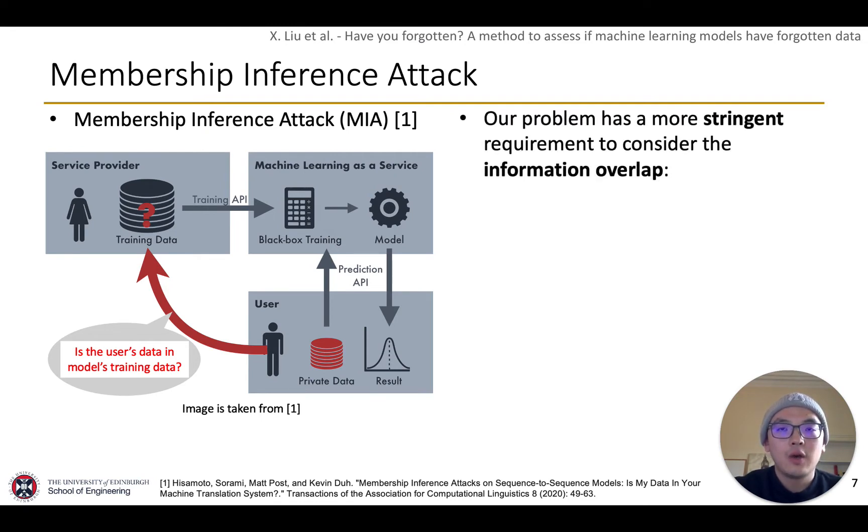Comparing to MIA, we also consider information overlap, which is a more stringent requirement. For example, assume two datasets with two-dimension data here, the query data and the training data. The data point containing overlapped information in this area may cause MIA methods to return false positive. In our method, we also need to consider this information overlap, and we propose a solution to calibrate this overlap.